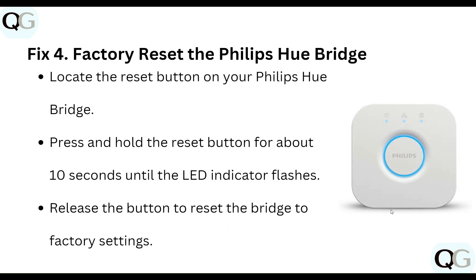The fourth step is to factory reset the Philips Hue bridge. Locate the reset button on your Philips Hue bridge, press and hold the reset button for about 10 seconds until the LED indicator flashes, then release the button to reset the bridge to factory settings.